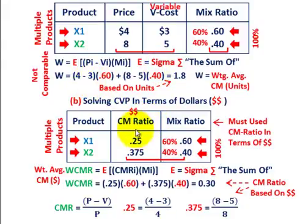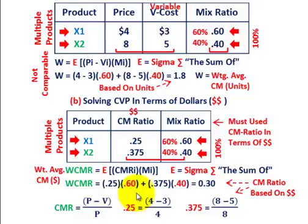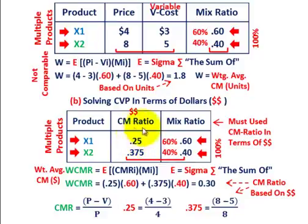In terms of dollars, for product X1 the price is $4 versus variable cost of $3. We take $4 minus $3 and divide by the unit price, giving us a contribution margin ratio of 0.25 for product X1. For product X2, $8 price minus $5 variable cost divided by the $8 unit price — so 8 minus 5 divided by 8 gives a contribution margin ratio of 0.375, which goes times the 40% mix ratio.